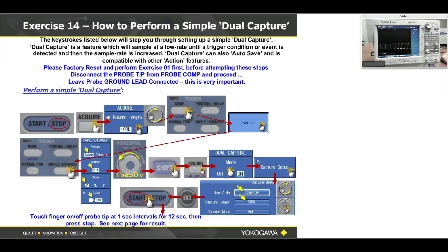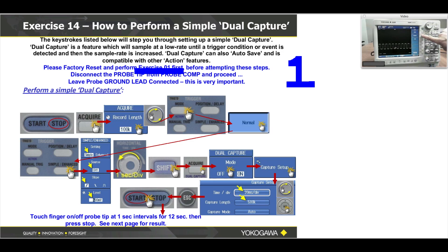I've given you an exercise here of how to perform a dual capture. I would encourage you to do this — it uses one probe, so one channel. It can be a tricky exercise, but I'll do it on the screen here. Let's all go back and do exercise one. I have the probe connected to the compensation signal. I'm going to hit setup, then press auto setup. So I've got about two cycles — let's all attempt dual capture.